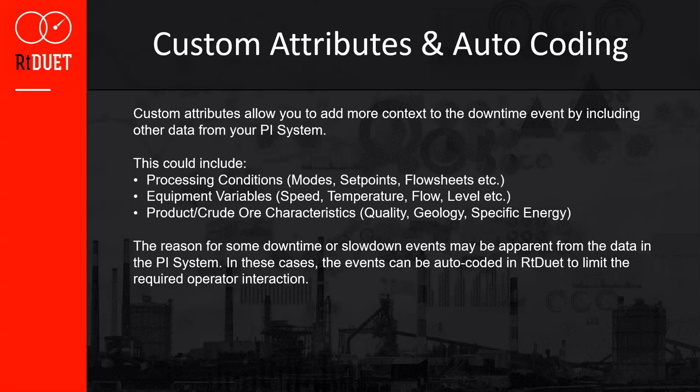Since RTDuet sits on top of the OSIsoft Pi system, we can leverage the power of Pi to gain more functionality. Custom attributes allow greater context to be applied to downtime events by including other data from your Pi system, enabling you to further slice and dice the data to reveal true root causes. For example, you can answer questions such as: at what tonnage do we start to see more plug-ups? Which product specs generate the most operational delays? Does product type impact our MTBF? RTDuet can also use Pi tags to auto-code events — through a series of logic statements, RTDuet can preload the reason code into the event frame, significantly reducing the time required for operators to classify events.